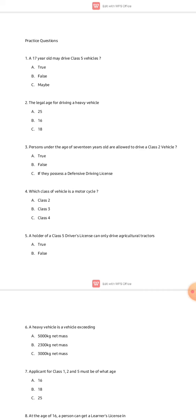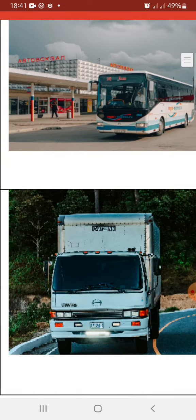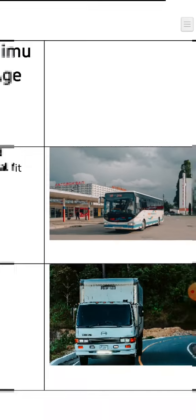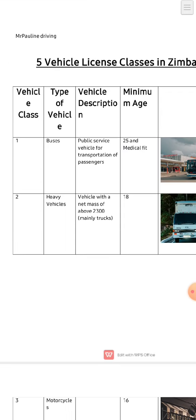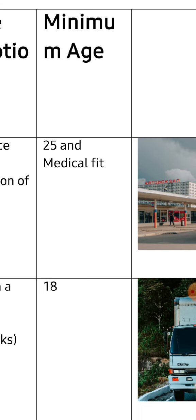Let's start with class one. Class one is our buses — as you can see that's a bus here. Class one is described as a public service vehicle for transportation of passengers. To attain a class one license you have to be 25 years old and also medically fit. They will require you to go for your medicals and the doctor must be satisfied that you are medically fit.